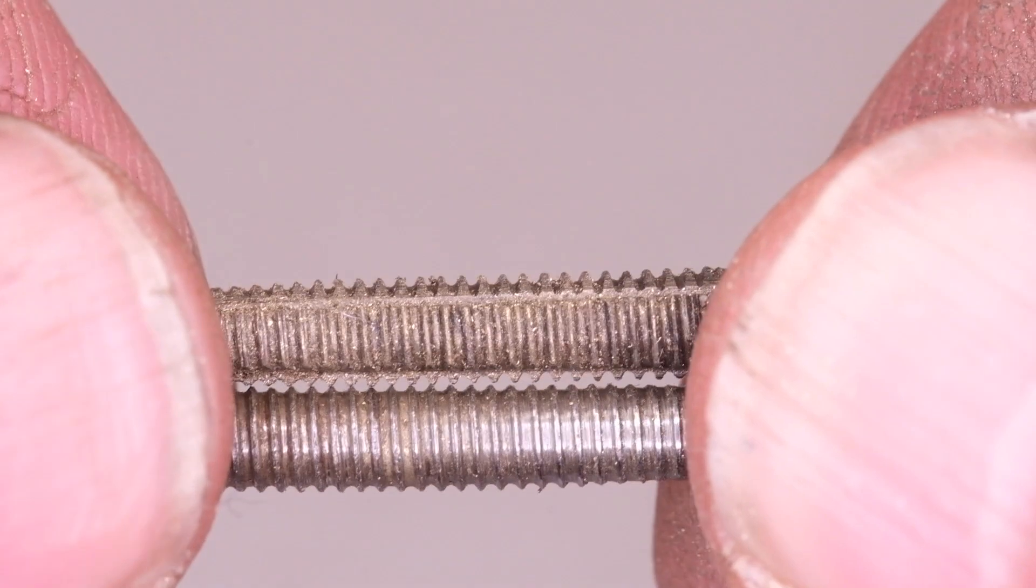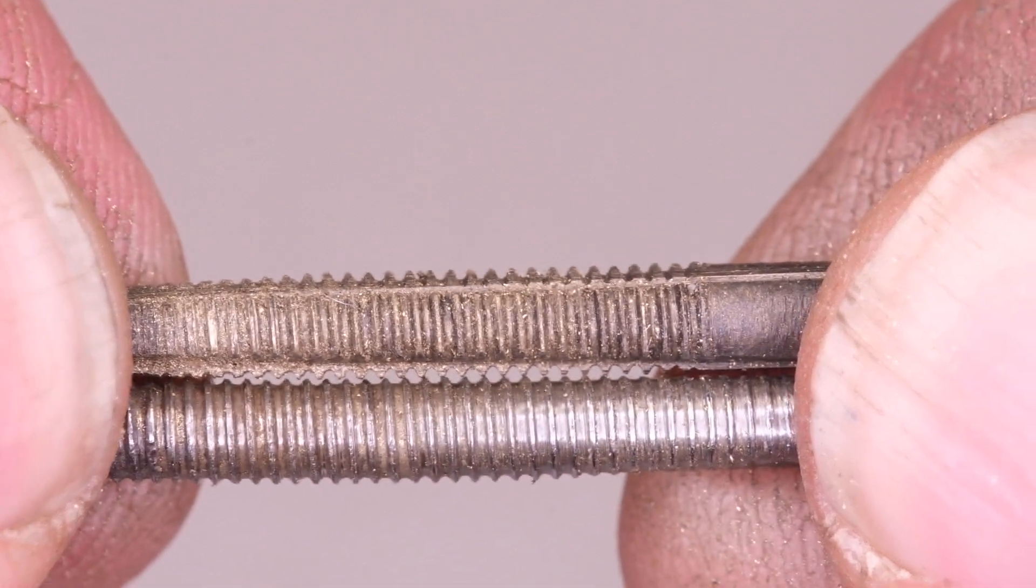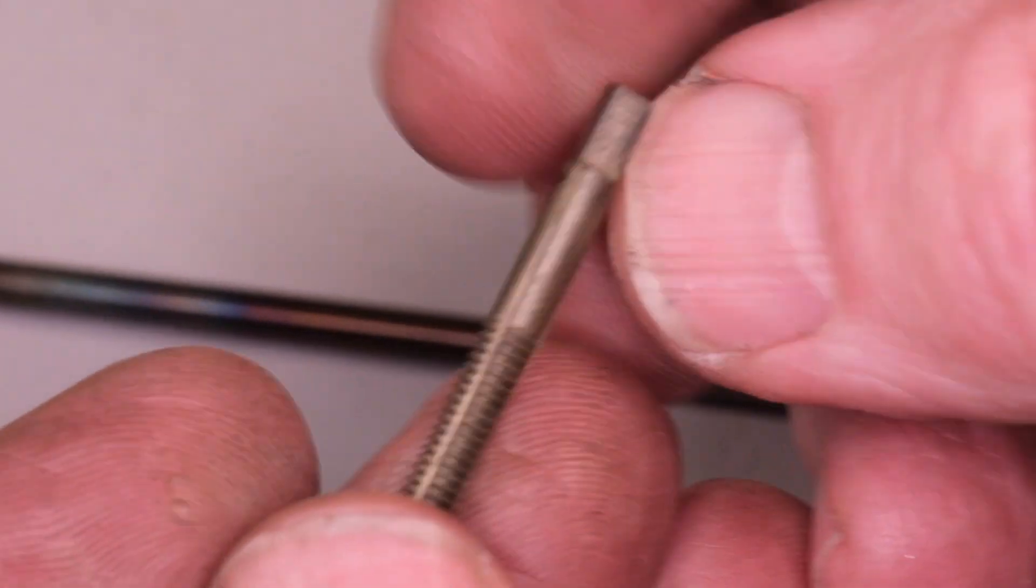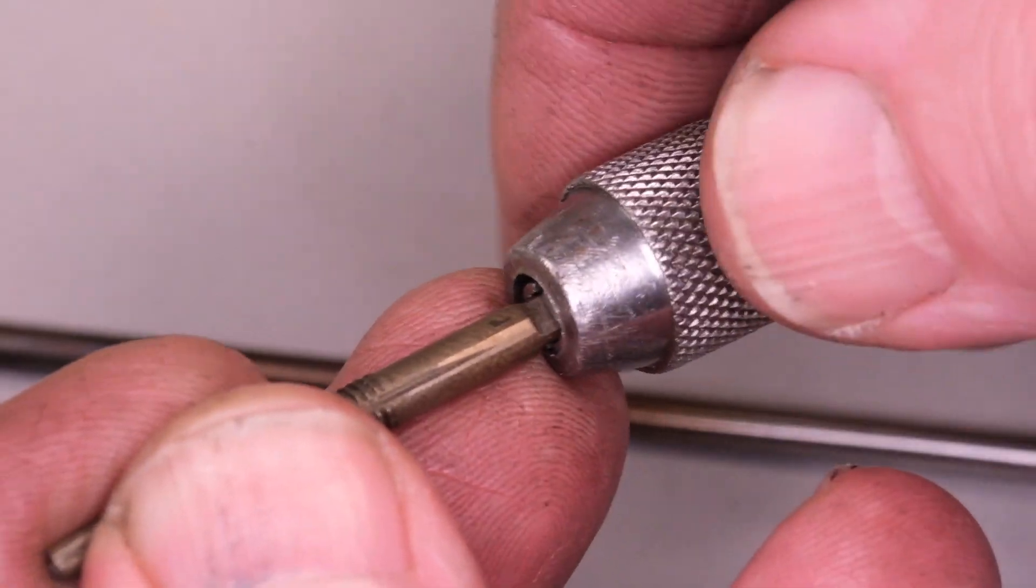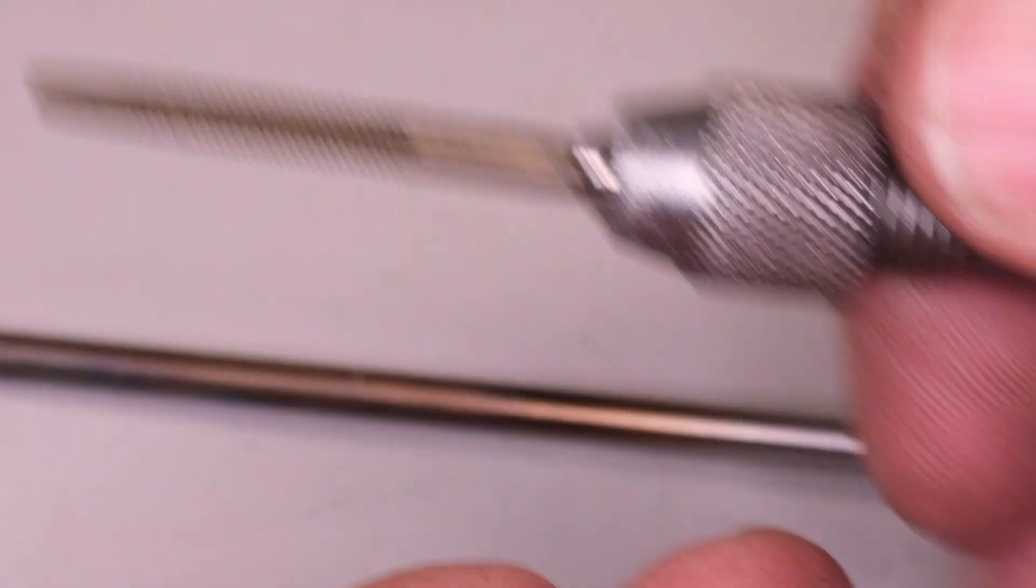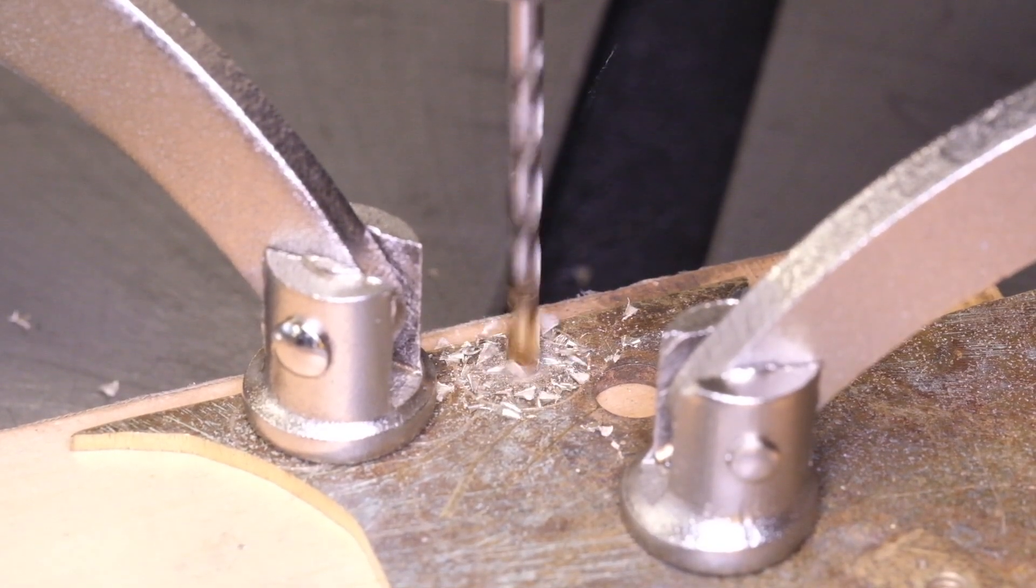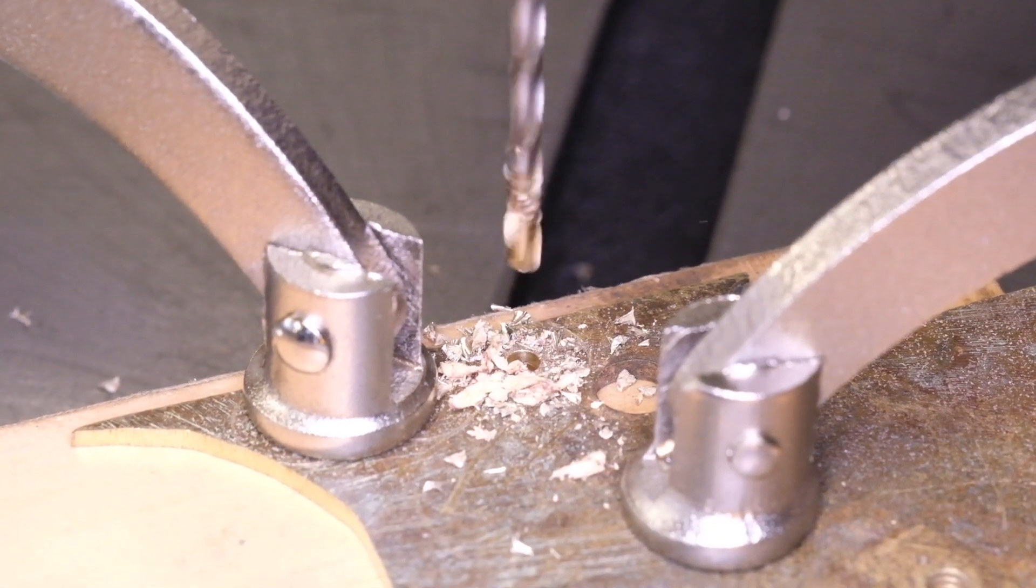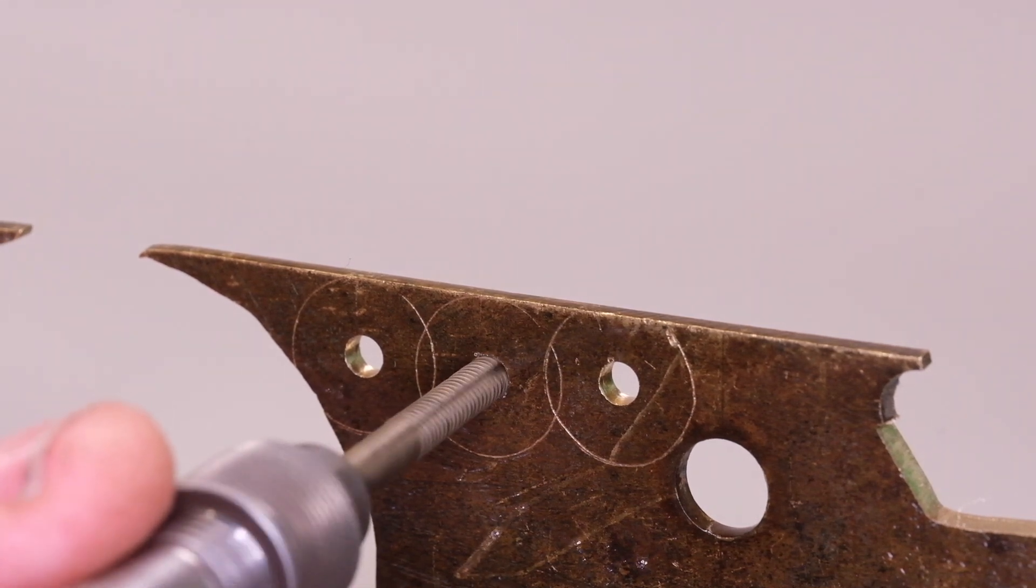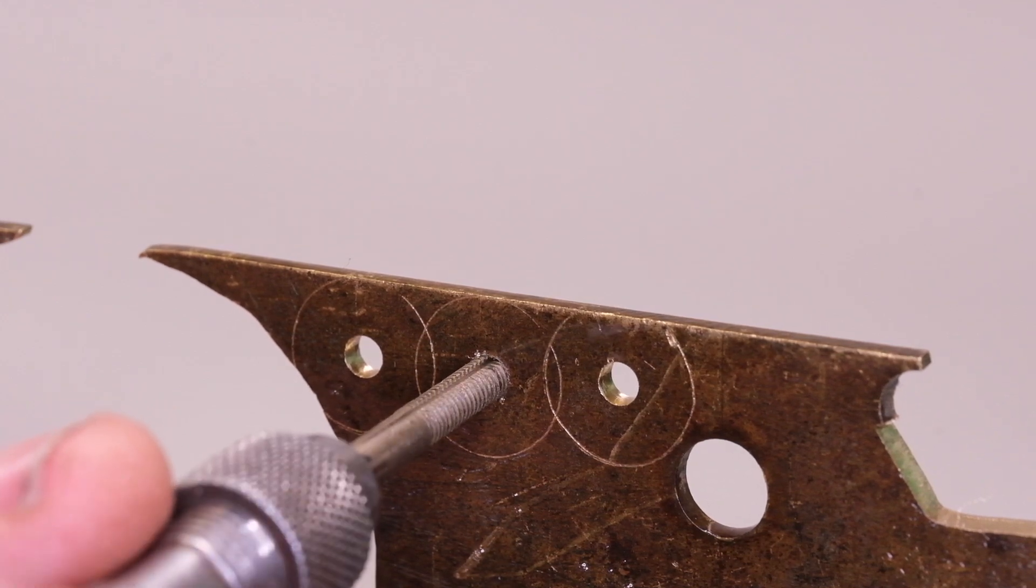Once we've done that, we can remove the host material and we can see whether it works. I've got some old cast brass plate here and we just drill a couple of pilot holes. The tap works absolutely fine, but my first set of pilot holes were actually a little bit big. The thread isn't forming fully.